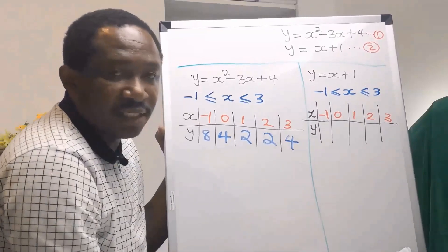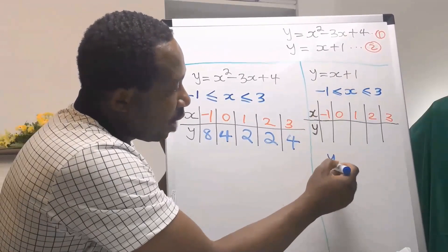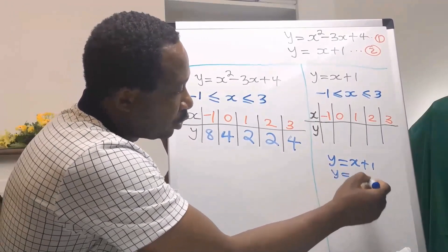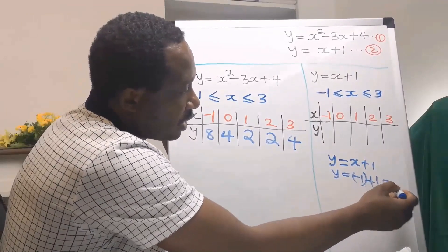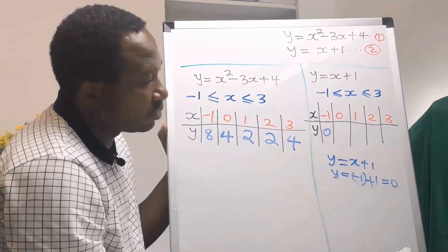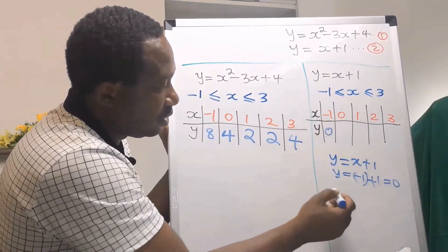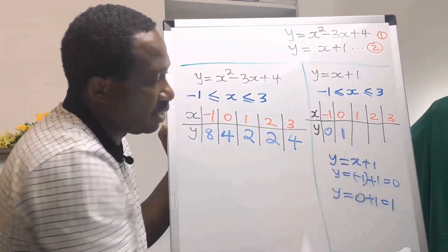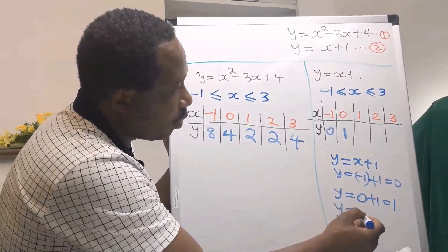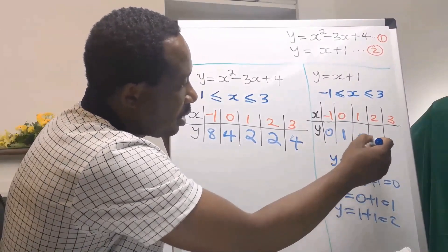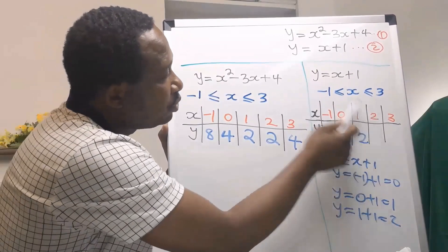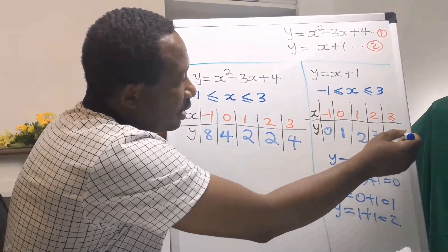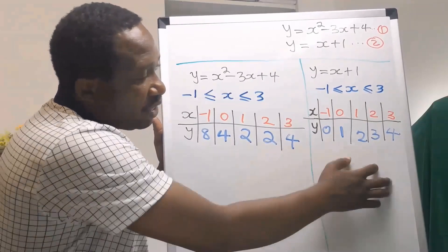For table 2, y equals x plus 1. When x is minus 1, y is 0. When x is 0, y is 1. When x is 1, y is 2. When x is 2, y is 3. When x is 3, y is 4. Both tables are now filled.